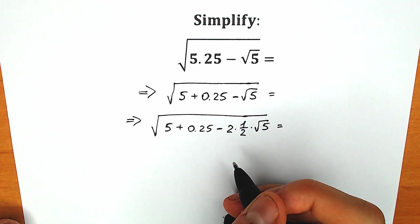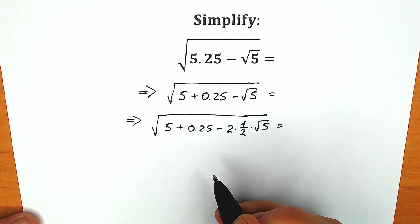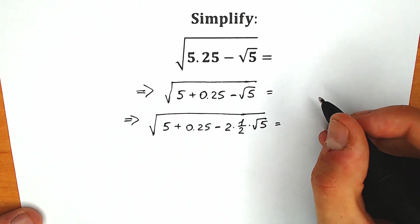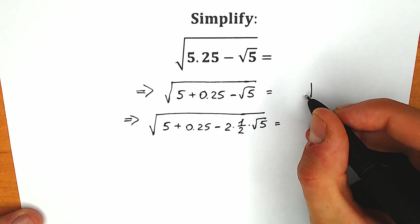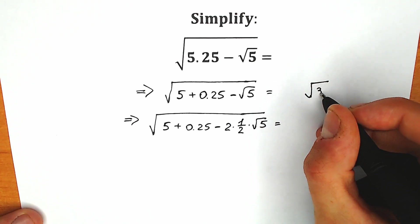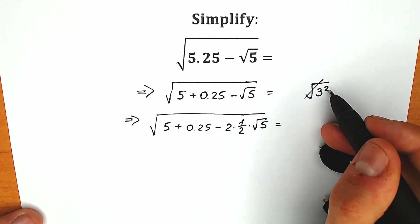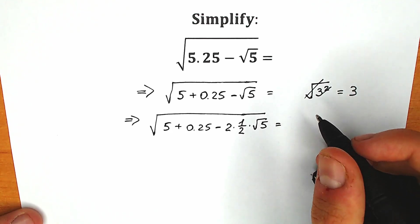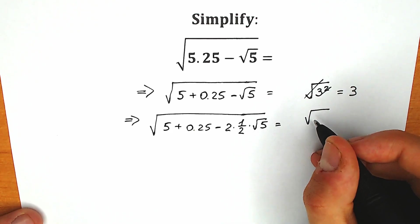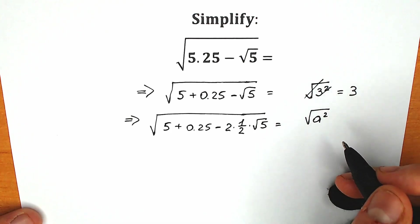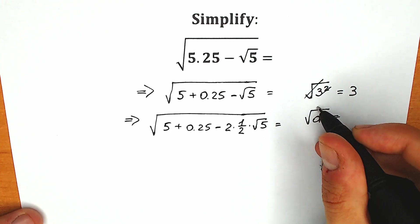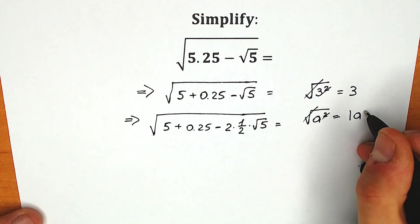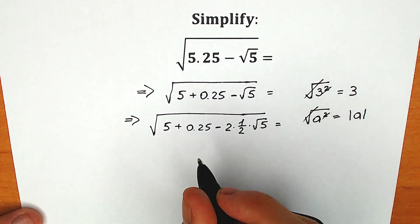The main idea to solve this question is to create a square inside this square root sign. Because when you have, for example, square root of 3 squared, you can easily cancel it, and as a result you get 3. When you have square root of a squared in general, you can cancel it, and the result equals the absolute value of a. So the main idea is to create a square.